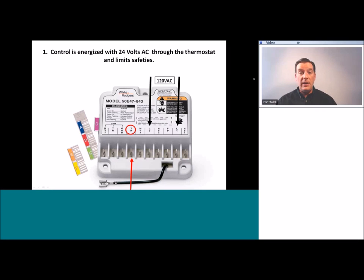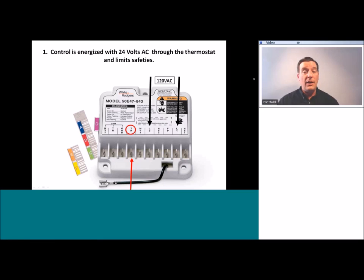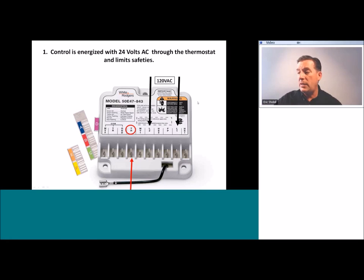Let's take a look at the non-integrated hot surface ignition control module. The function of this is very similar to what we just saw, with a couple of differences. First, the ignition source is not a spark — it is a hot surface igniter. The hot surface igniter is a 120-volt device operated off of 120 volts AC. In order for the ignition controller to operate that device, it has to have 120 volts AC. So on a non-integrated HSI control you will find 120 volts between terminals L1 and L2.